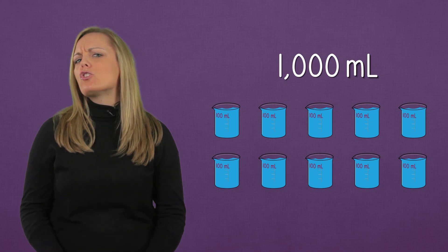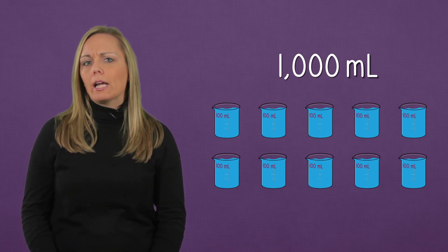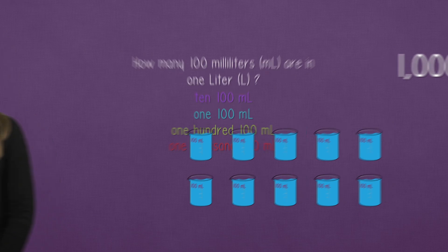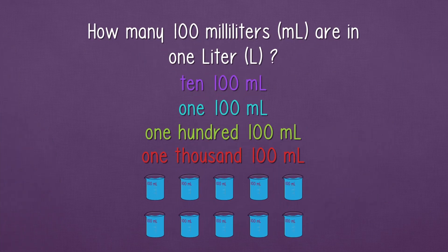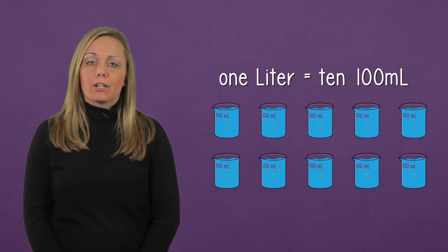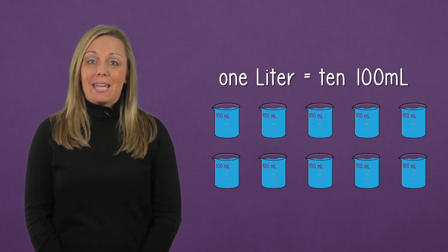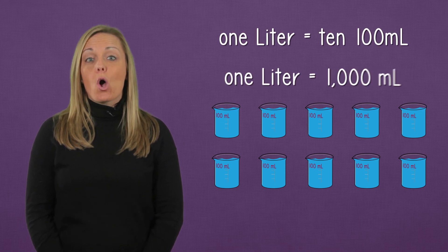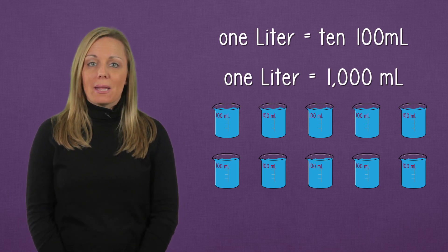So, how many hundred milliliters are in 1 liter? We have 10 hundred milliliters in 1 liter. That means that 1 liter is 1,000 milliliters.